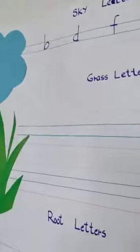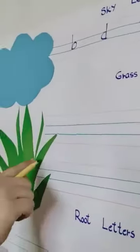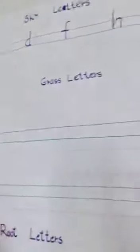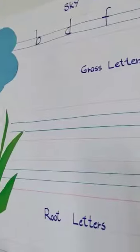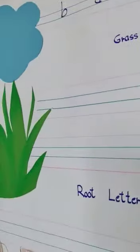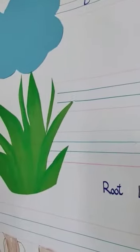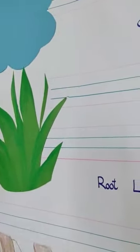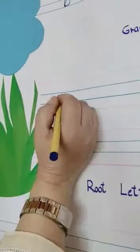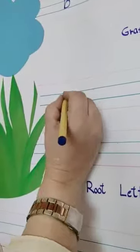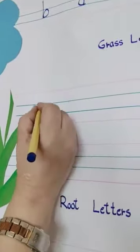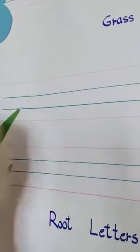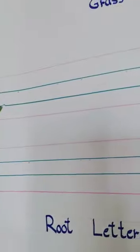Look at the next. These are grass letters. Grass means earth. Where is the grass? Grass is on the earth. So which letters come in between the two center lines, they are called grass letters.